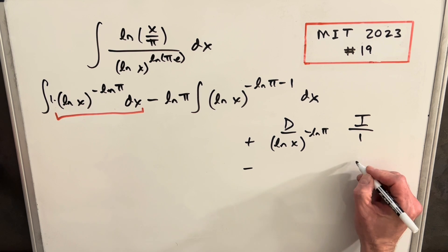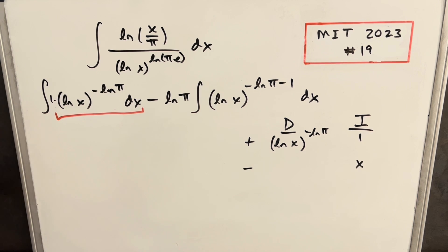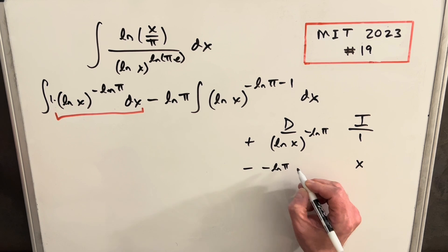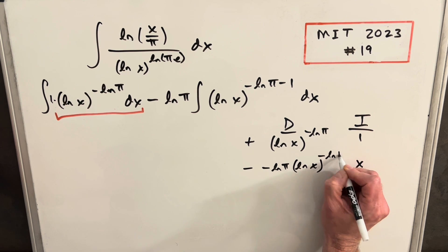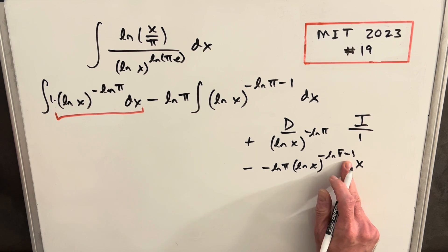So integrating that 1, we're going to get an x. Differentiating this, we'll just use the power rule, then the chain rule. So we'll have a minus ln π in front, ln x, and then we're going to have minus ln π. It's taking up too much space. Minus 1.